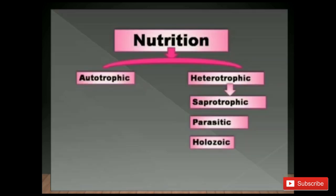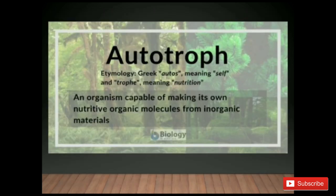Nutrition is divided into two major groups: autotrophic and heterotrophic. Heterotrophic is further divided into three major groups: saprotrophic, parasitic and holozoic. Autotrophic comes from 'autos' meaning self and 'troph' meaning nutrition — an organism capable of making its own nutritive organic molecules from inorganic material. Autotrophs make their own food; plants are an example.